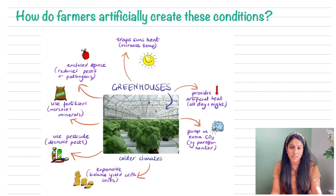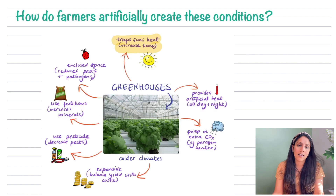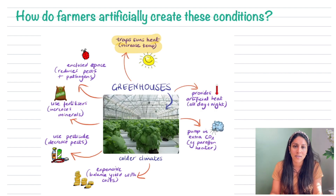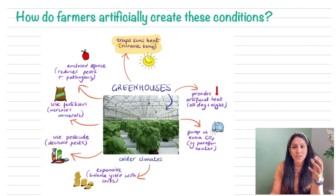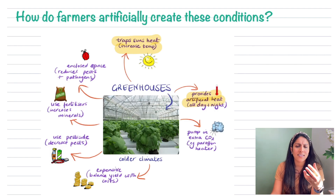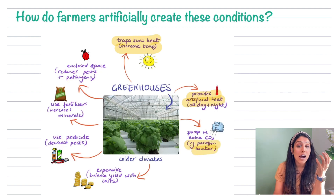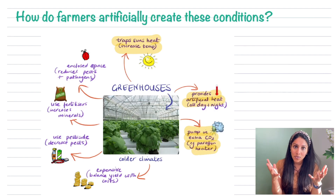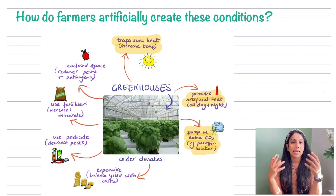Greenhouses are like glass sheds where farmers put their crops to control conditions and get maximum growth. The glass traps the sun's heat and increases the temperature. Increasing the temperature to the right level maximises the rate of photosynthesis. A heater can also provide artificial heat day or night, especially in colder climates. A specific example is a paraffin heater, which not only gives heat but also pumps in extra carbon dioxide — both of which are important to increase the rate of photosynthesis and the yield.